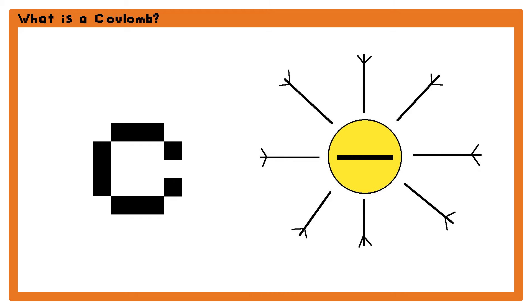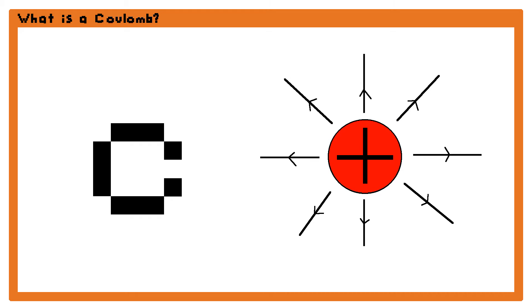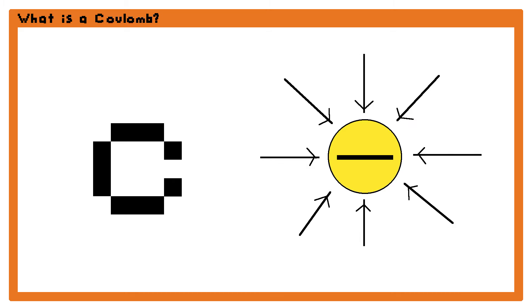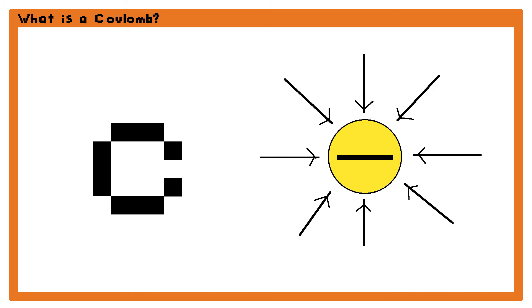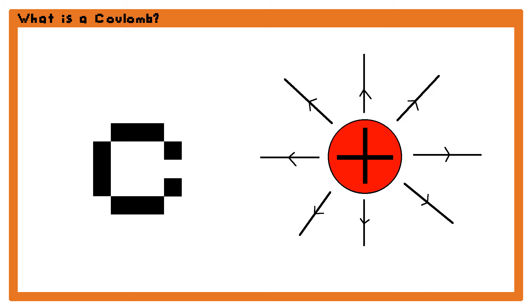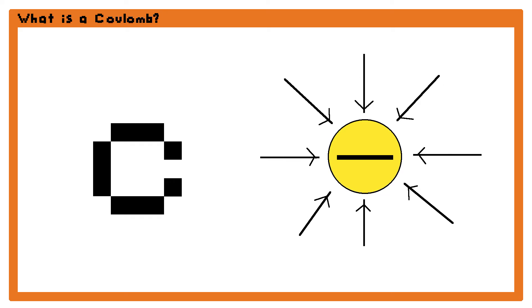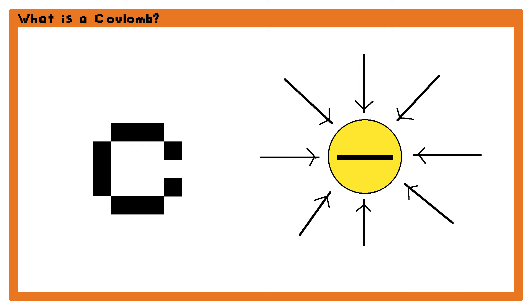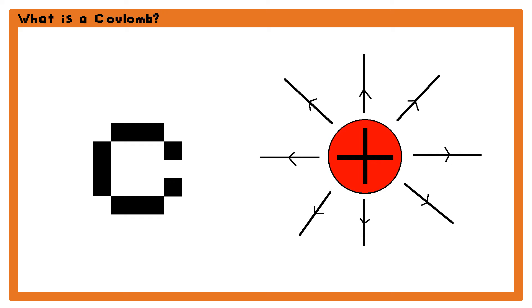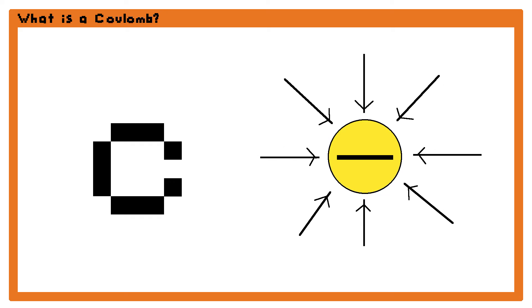When writing the units of coulomb, you would write it with a capital C, because it is named after a person. As with all other units, it has the SI modifiers that can change its scale, like kilo or milli, that divide or multiply by a thousand.